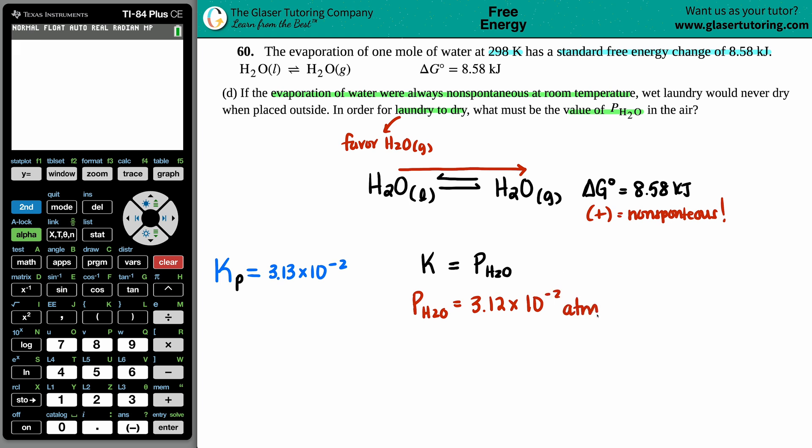The partial pressure has to be equal to 3.12 times 10 to the negative second. Now I'm going to just attach the atm. But now here's the thing: this is at equilibrium. And remember what the term equilibrium means? Equilibrium means that the rates of the forward and the reverse reaction are the same. We, in this scenario for laundry to dry, we do not want these rates to be the same. We want to overpower the forward reaction. We don't want the reverse happening, so the rate of the forward one has to be much greater than the rate going backward.